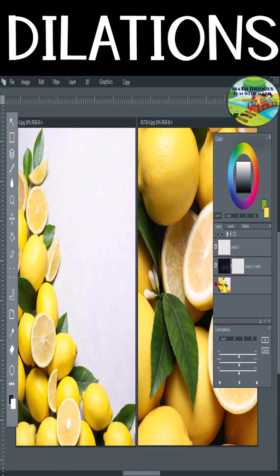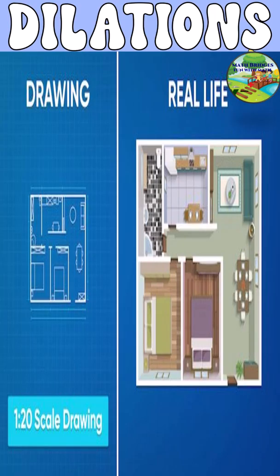When we crop or resize an image, dilation helps maintain the proportions perfectly. When we make a blueprint of a house, we use this dilation method. You can see the drawing and the real-life version—the small size and the big size. Dilation changes the position and size of the figure, but not the shape.